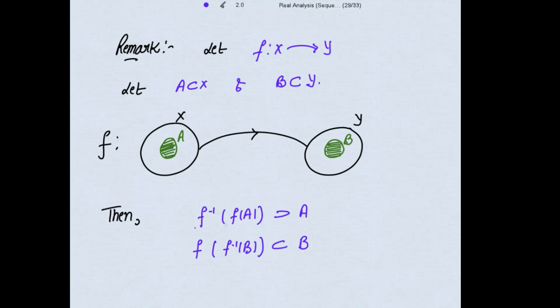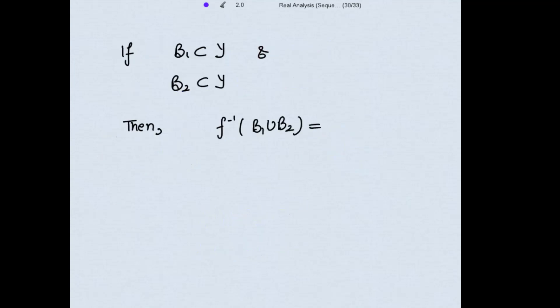If f inverse lies outside the bracket then it is the larger one, and if f inverse is inside the bracket then it becomes the smaller one. That is, if B₁ and B₂ are subsets of Y, then f inverse of their union equals f inverse(B₁) union f inverse(B₂).